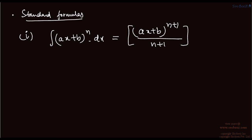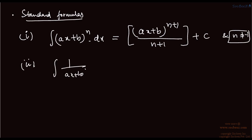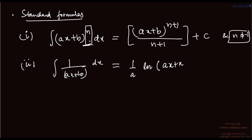We add plus c, and note that n is not equal to minus 1. In that case there is a different formula. The integral of 1 upon (ax + b) dx, where n is minus 1, gives 1/a times ln of |ax + b| plus c. The constant of integration is included everywhere in indefinite integration, but not in definite integration.